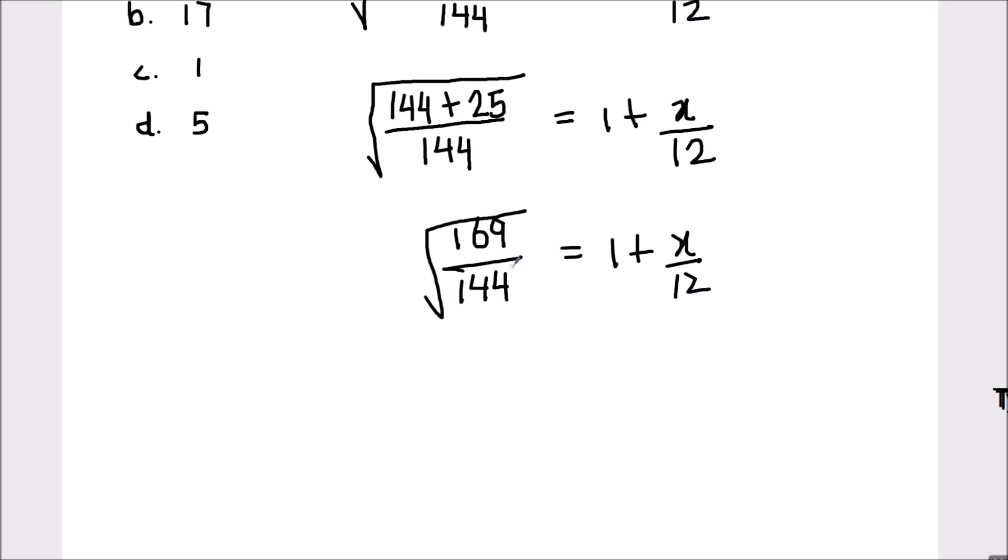Now, square root of 169 is 13 and square root of 144 is 12, so that's 13 upon 12 equals 1 plus x upon 12.